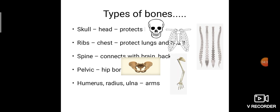In our arms, the upper arm has the humerus bone, and the lower arm has two bones: radius and ulna. In our legs, the thigh has the femur bone, and the lower legs have tibia and fibula. So the different types of bones are: skull, ribs, spine, pelvic, humerus, radius, ulna in the arms, and femur, tibia, fibula in the legs. Some bones protect internal organs, some give rigidity, and some help in movement.